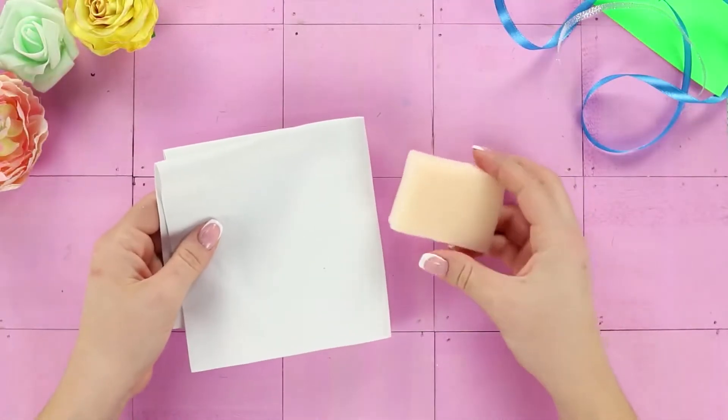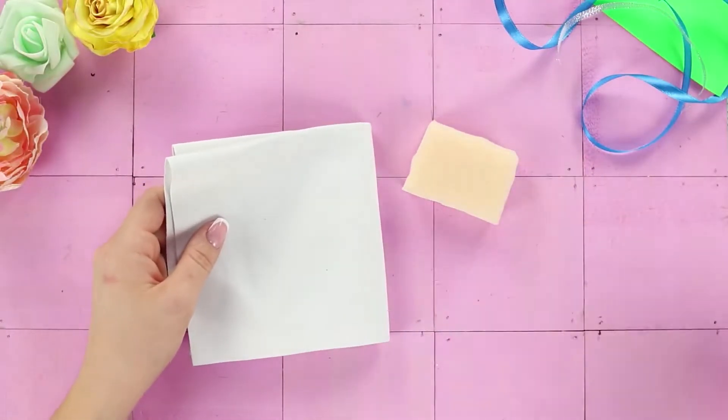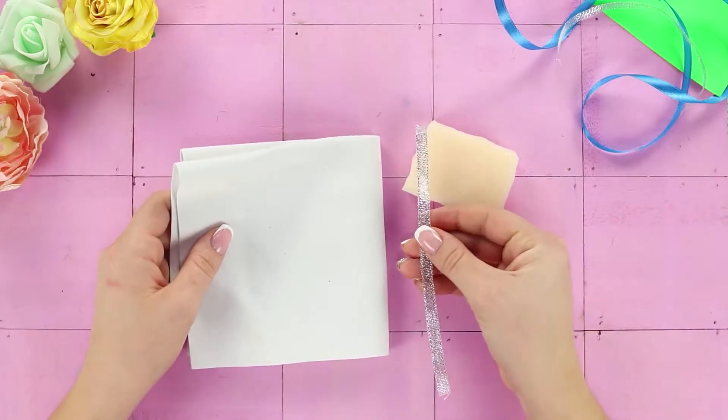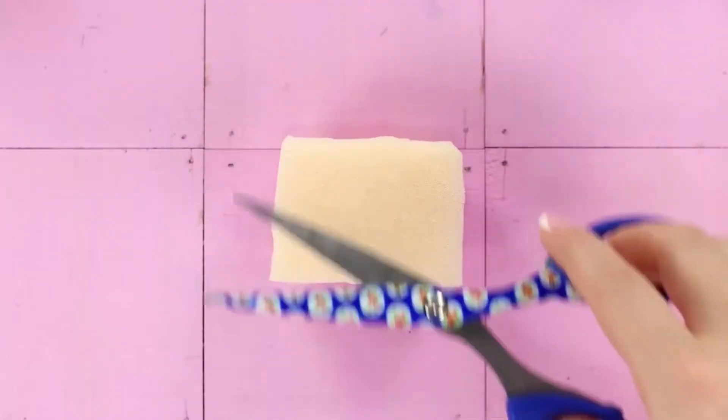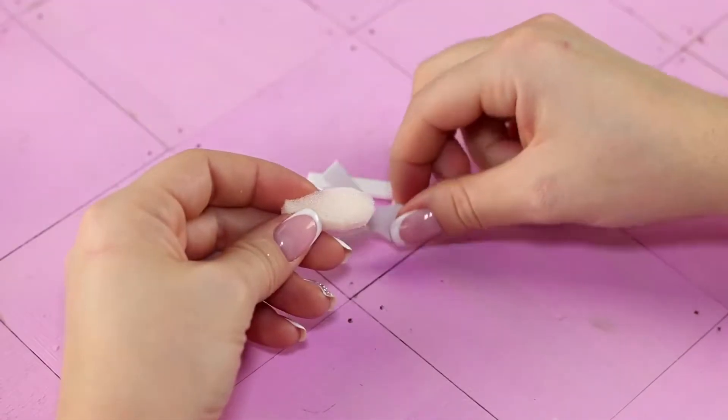For the next life hack, you will need a piece of thin soft foam rubber sheet, plain foam rubber, and a ribbon for decoration. Cut out two ovals the size of Barbie's feet from foam rubber.